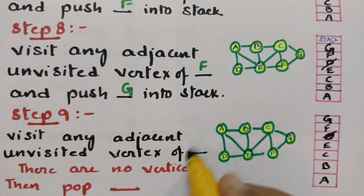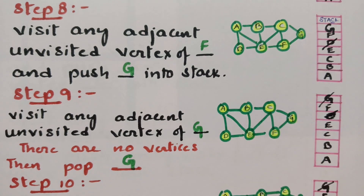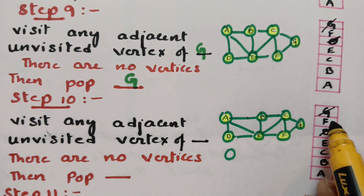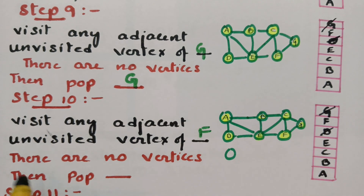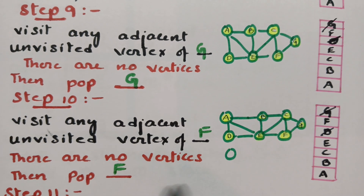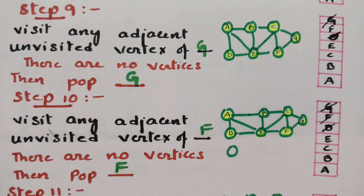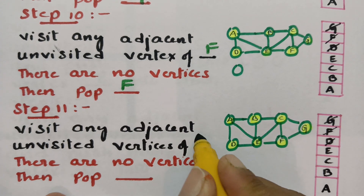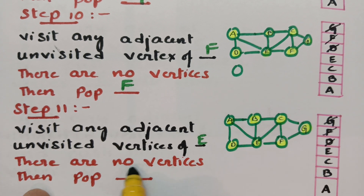Step 9: From G, is there any way to go? There are no unvisited vertices from G, so pop G. Step 10: The top element is now F. Visit any unvisited vertices of F. There are no unvisited vertices of F, so just pop F.